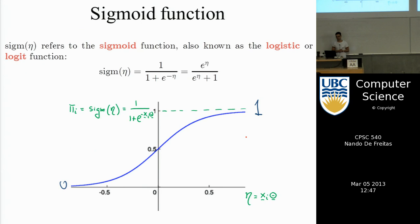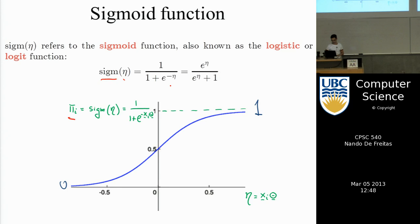Let's look at the sigmoid function. The sigmoid function, pi, also often written as sigma, of eta, is one over one plus e to the minus eta. You can also write it as e to the eta divided by e to the eta plus one. As eta goes to infinity, the function asymptotes at one. As eta goes to minus infinity, the function goes to zero — it's essentially like a gate function.